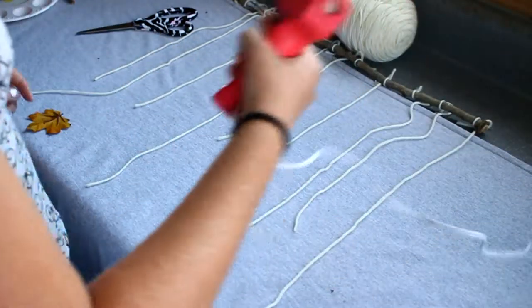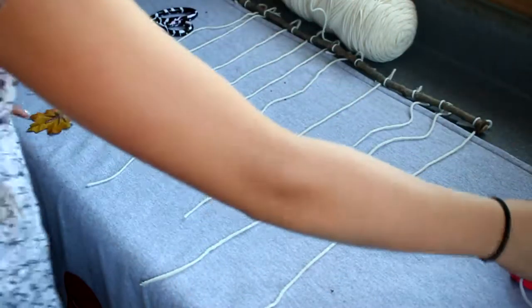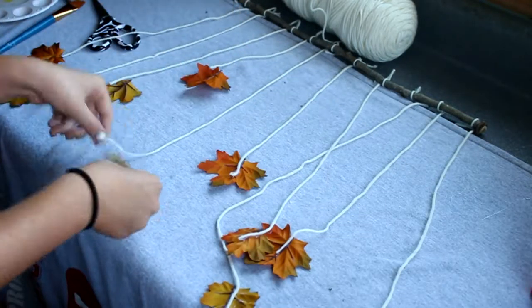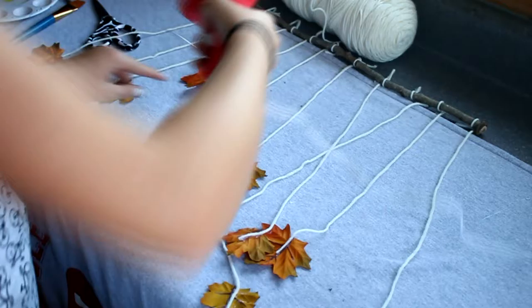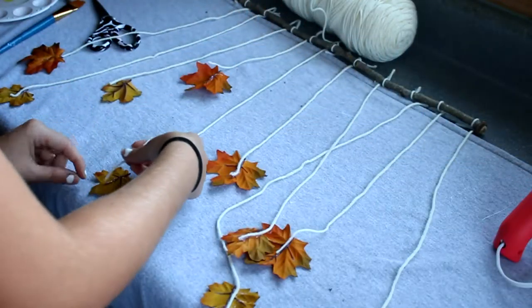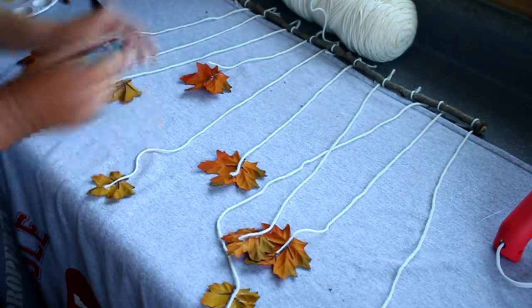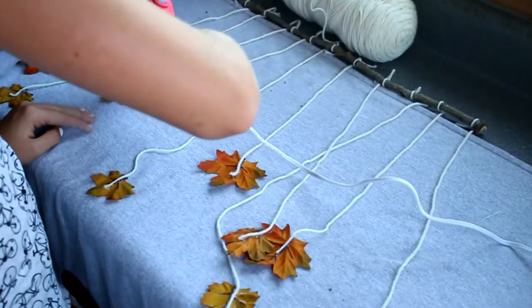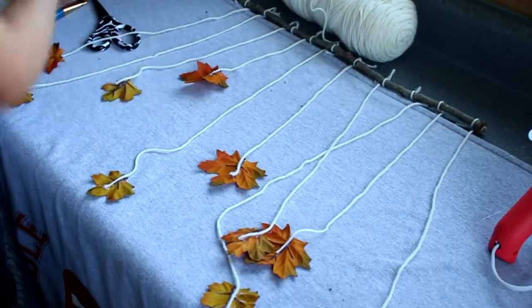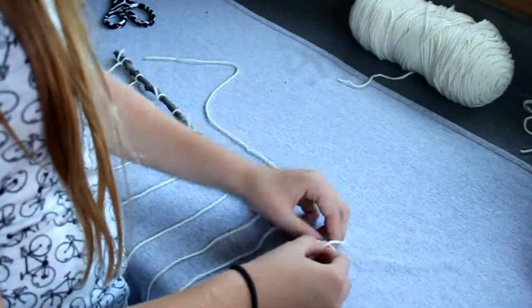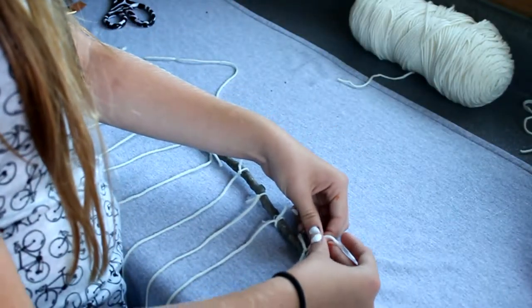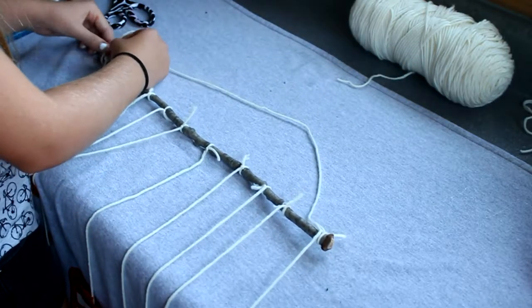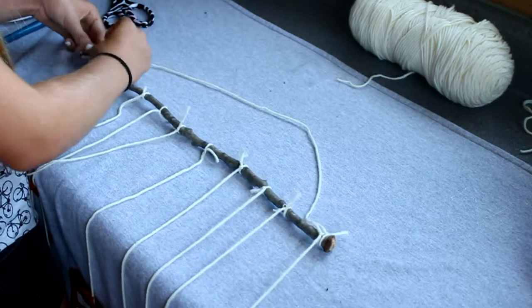After I finished tying all the string, I hot glued all of the leaves to the ends of the string. After hot gluing all the leaves, I cut another longer piece of string and tied it to the top to be able to hang it. That was it for this DIY.